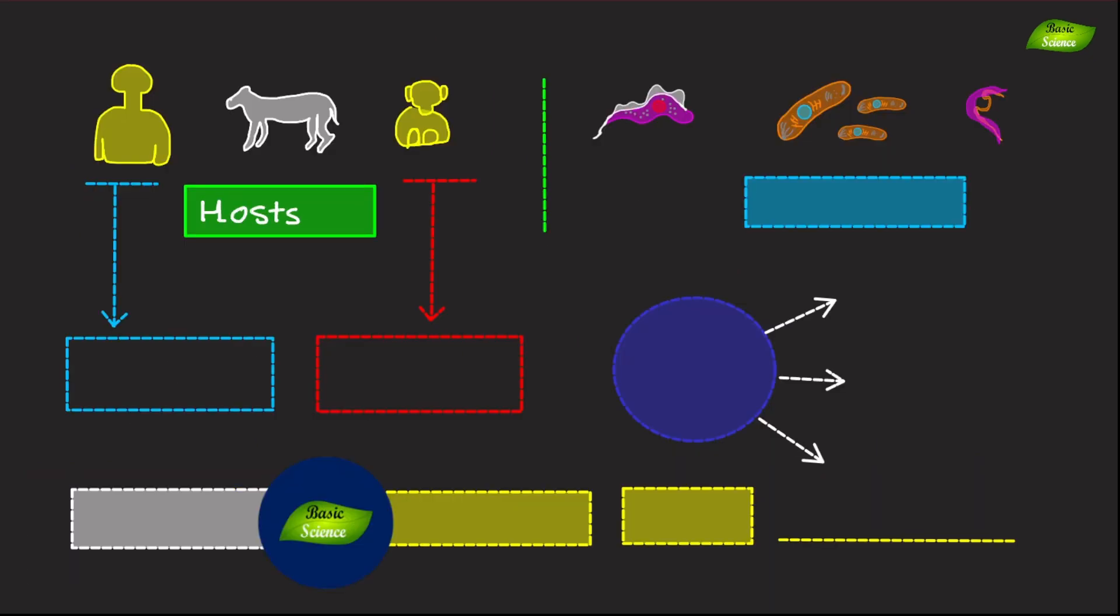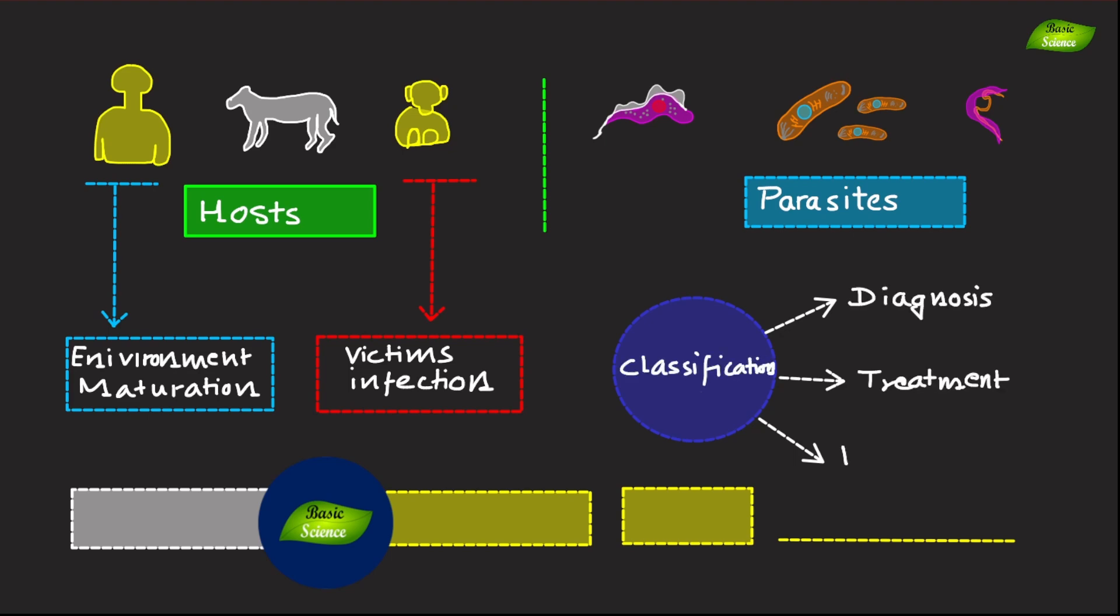Hosts exhibit a wide range of relationships with parasites, from acting as definitive environments for maturation to being accidental victims of infection. Recognizing these classifications aids in diagnosing, treating and preventing parasitic diseases.